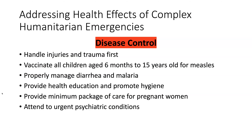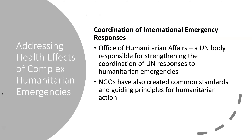For disease control, handle injuries and trauma first, vaccinate all children aged 6 months to 15 years if possible, properly manage diarrhea and malaria, provide health education and promote hygiene, provide a minimal package of care for pregnant women, and attend to urgent psychiatric conditions. Individuals may be in a refugee camp for a significant amount of time. The international emergency response is coordinated by the UN body called the Office of Humanitarian Affairs, with NGOs guided by common standards and principles for humanitarian action.